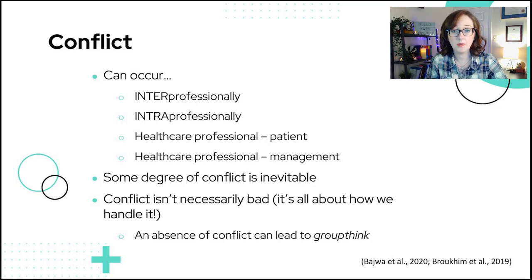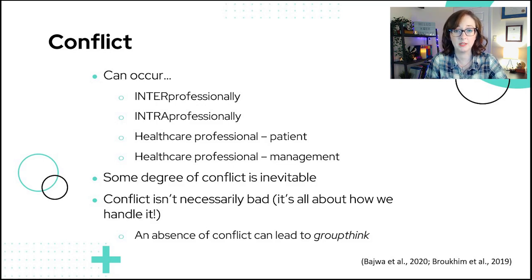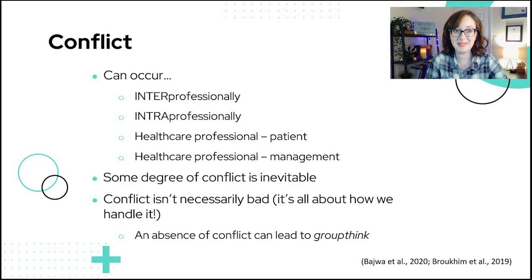For example, horizontal violence in nursing, or with medicine — medical students and residents may not speak up when they see a supervisor making an error, fearing that saying something could negatively impact their career. One of our focus readings this week highlighted how health science students, including medicine, nursing, and social work, can experience increased conflict within their own professions. Conflict can also occur between healthcare professionals and patients, and between healthcare professionals and management.